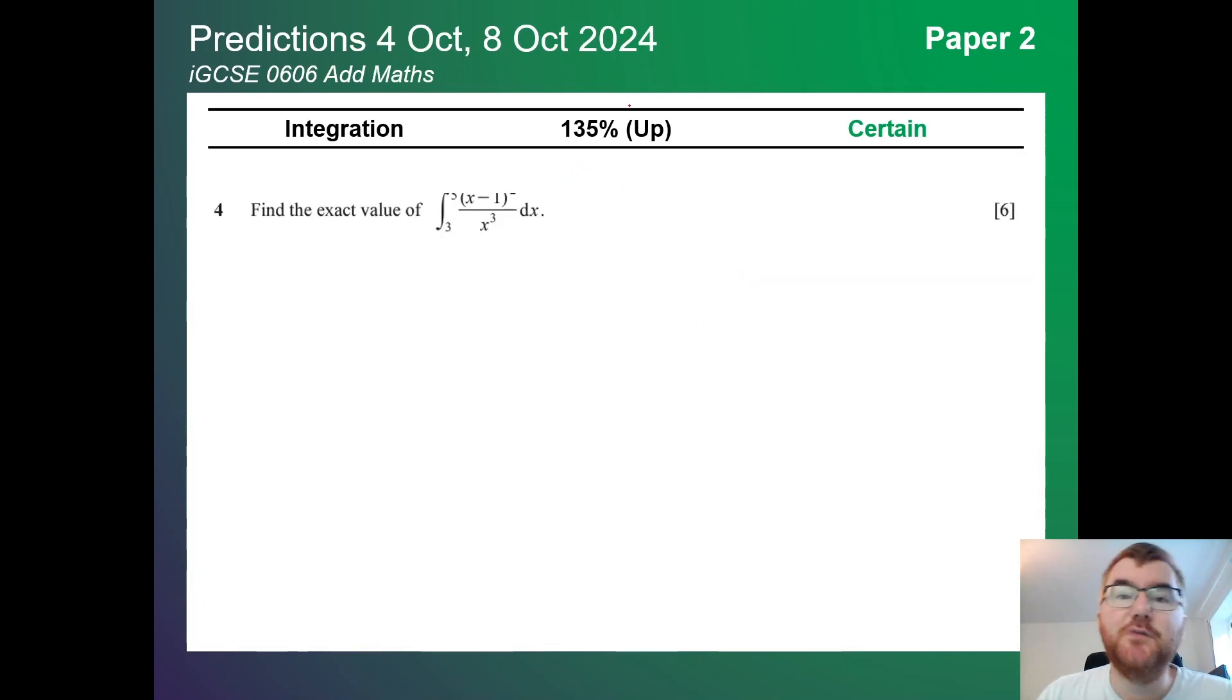And of course integration. Its twin again. It does appear. We've got these kinds of things here. This could be something like x minus 1 all squared. It's cut off slightly. Again exact value. That's important. Making sure that we can integrate with slightly more difficult integrations than maybe something on A-level maths paper 1.